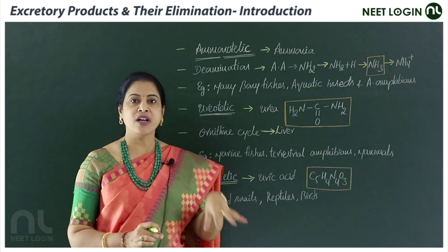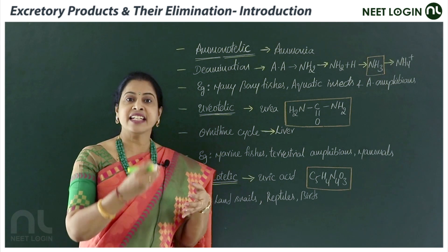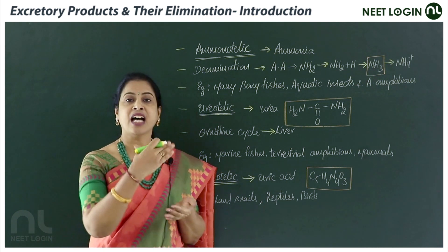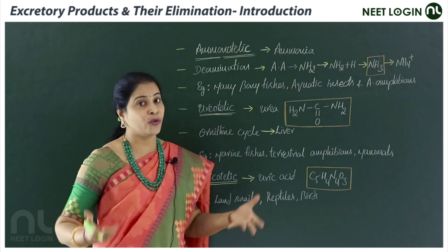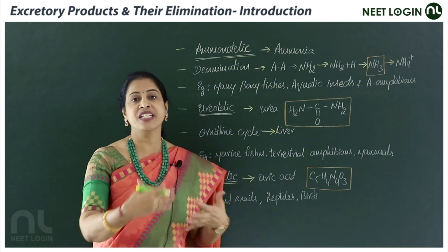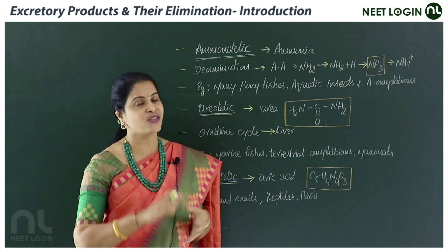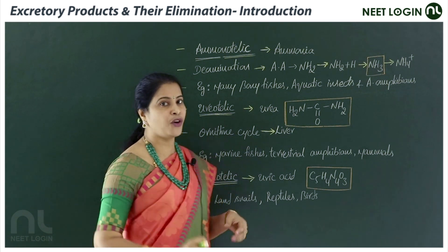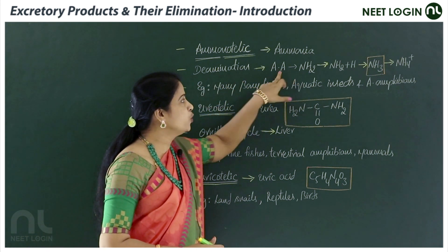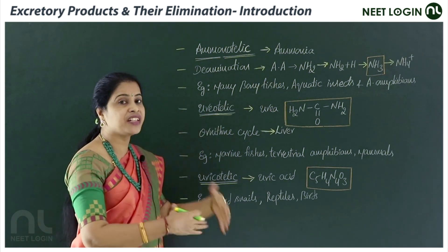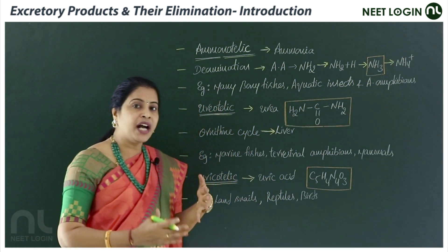That phenomenon is called ammonotelism. Ammonia is easily soluble in water, and in order to eliminate ammonia, the animals need to lose more water. For aquatic animals, losing water is not a problem. The amount of energy required for the formation of ammonia is also less. Ammonia is formed by deamination — the removal of the amine group from amino acids — which then joins with H⁺ ions to form ammonia.